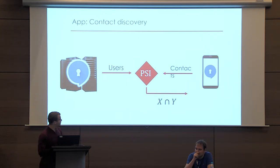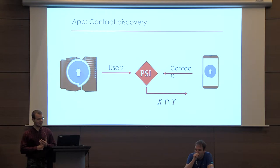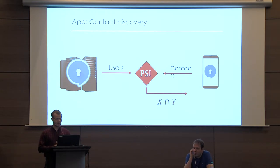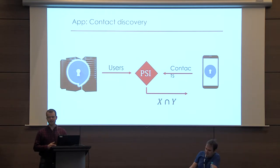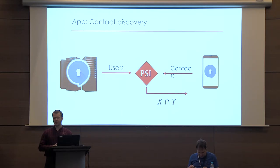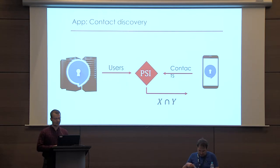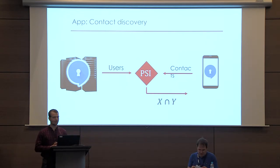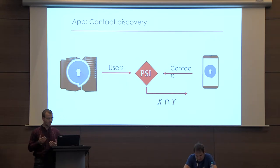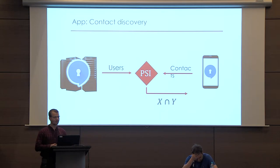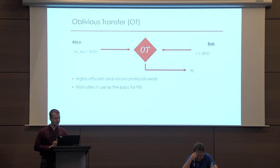To motivate this, one of my favorite applications of private set intersection is this contact discovery scenario where Signal has a big list of users, and then there's some new customer that just signed up for the service, and the customer wants to learn which of its contacts use the Signal app. But they don't necessarily want to reveal all their contacts, and Signal doesn't necessarily just want to publish the list of users. So they can run a private set intersection protocol where only the user learns the other people they know also on the service. And there are many other applications, but I'll move on.